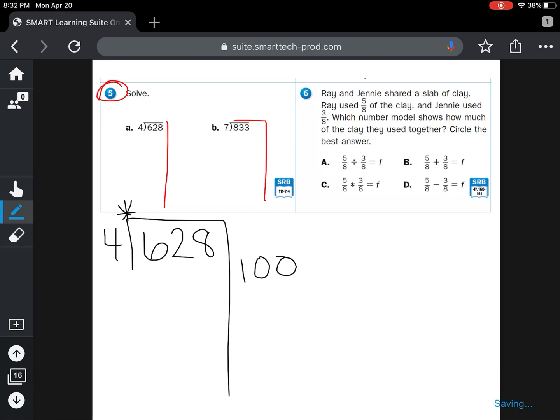Then I multiply at the top. I have to ask myself, what is 100 times 4? I know that 100 times 4 is 400. So now I can subtract. 8 minus 0 is 8. 2 minus 0 is 2. And 6 minus 4 is 2. There's my new dividend.